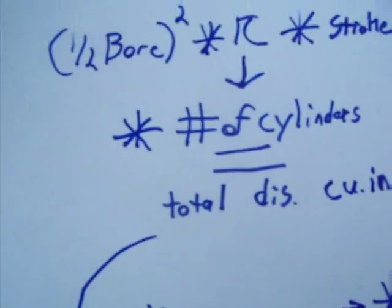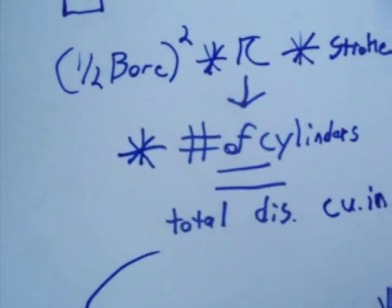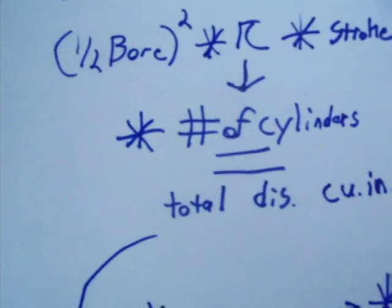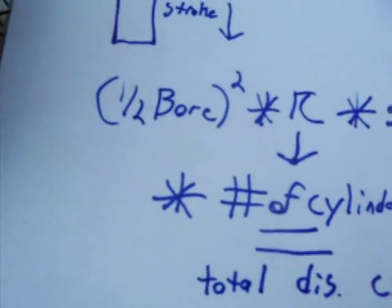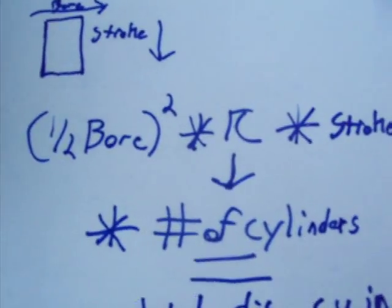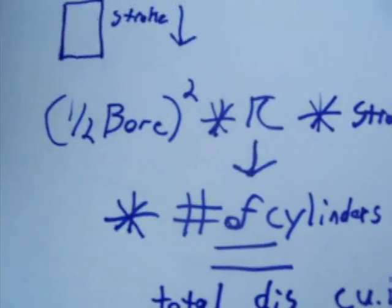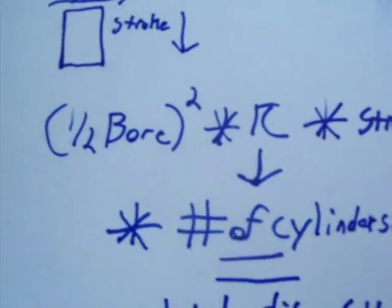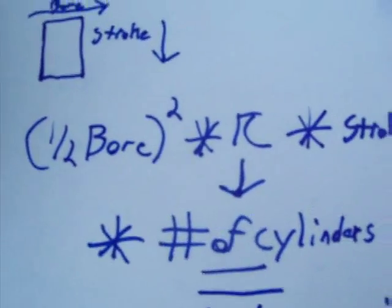Well, you can just take the bore and stroke in millimeters or centimeters or whatever it is and convert it easily over to inches. All you've got to do is, if it's centimeters, divide by 2.54. If it's millimeters, just divide by 10 before or after you divide by 2.54.